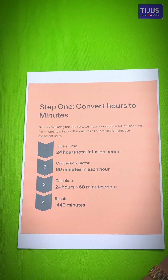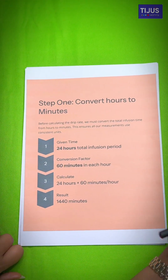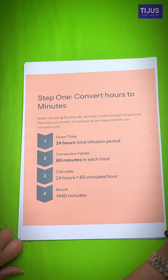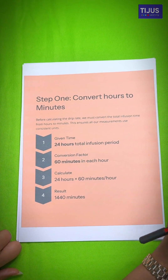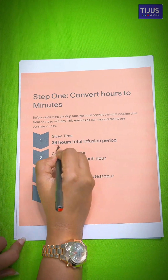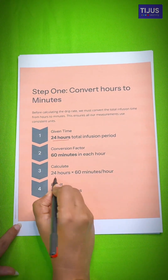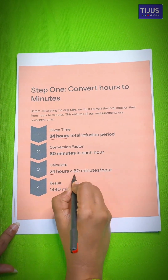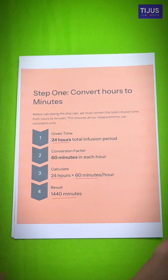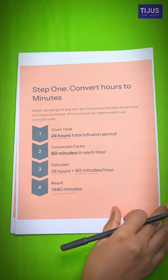Before proceeding to the answer, first we need to calculate the drip rate. For that, we need to convert the total infusion time from hours to minutes. In the question it is 24 hours, so we convert 24 hours into 60 minutes, which gives us 1440 minutes.